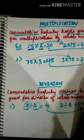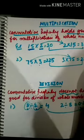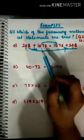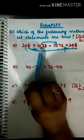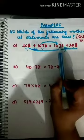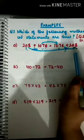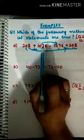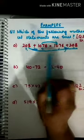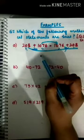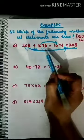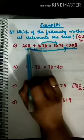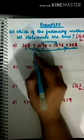Now let's work through some examples from exercise 2.2 of your maths course book. The first example shows 208 + 1076 on the left-hand side and 1076 + 208 on the right-hand side. Even without actually calculating, we can determine whether the statement is true by using commutative property. Since addition is commutative, changing the order of the numbers does not affect the answer. So the statement is true.